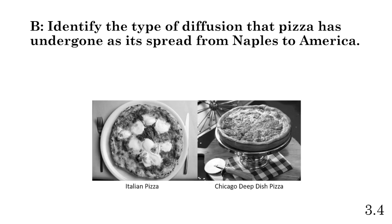Part B: identify the type of diffusion that pizza has undergone as it's spread from Naples to America. We can see Italian pizza on the left and Chicago deep dish pizza — it's not the same, but it has diffused and grown in popularity. We'll rule out relocation diffusion for that reason. The type of diffusion where an idea or object changes and adapts as it goes to new places is stimulus diffusion — a form of expansion diffusion where a concept spreads outward but changes and adapts to the places it diffuses to.